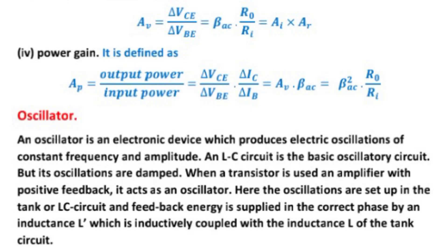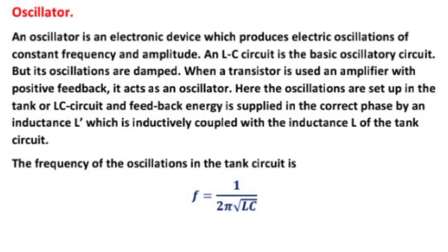What is an oscillator? An oscillator is an electronic device which produces electric oscillations of constant frequency and amplitude. An LC circuit is the basic oscillation circuit, but its oscillations are damped. When a transistor is used as an amplifier with positive feedback, it acts as an oscillator. The oscillations are set up in the tank or LC circuit, and feedback energy is supplied in the correct phase by an inductance L, which is inductively coupled with the inductance L of the tank circuit. The frequency of oscillations is given by f equals 1 upon 2 pi root LC.